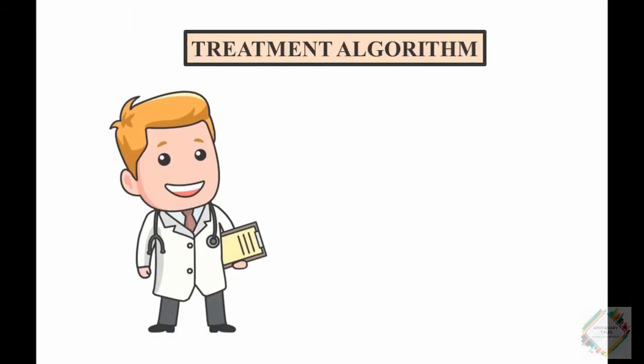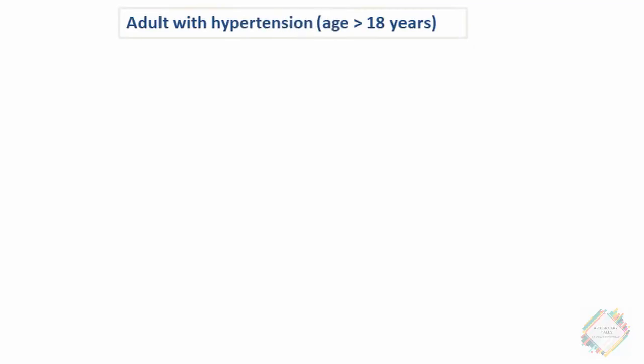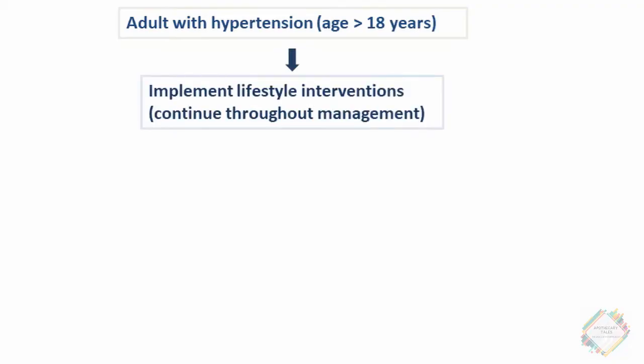Now, let's talk about the treatment algorithm — the basic protocol to be followed while prescribing antihypertensives for hypertension. First, for adults with hypertension aged greater than 18 years, we implement lifestyle interventions. Remember, lifestyle interventions are to be continued throughout the management.